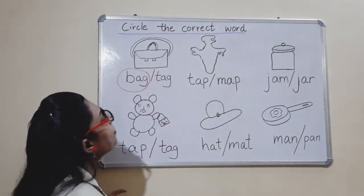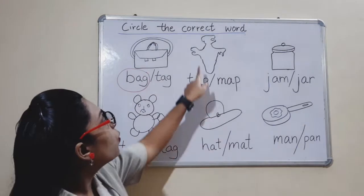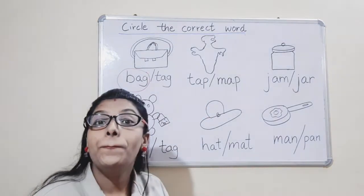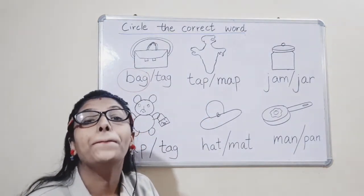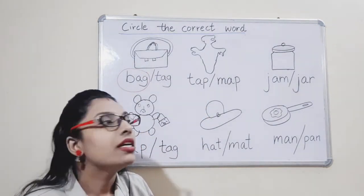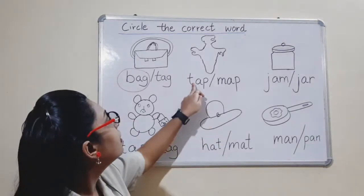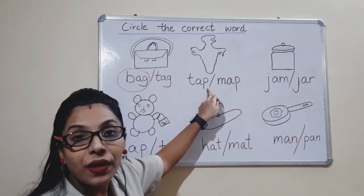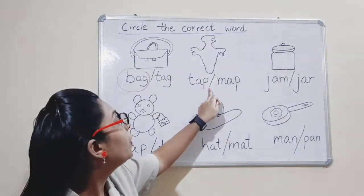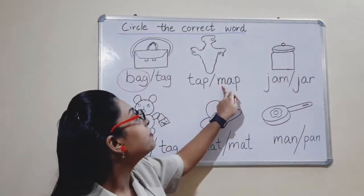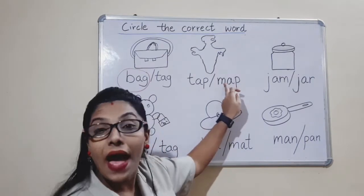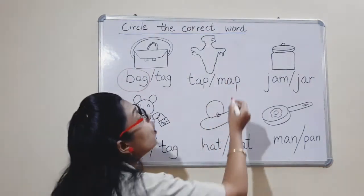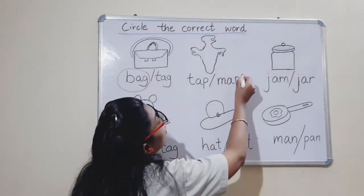Now what is this? M-A-P — map. Is this M-A-P, map? No. Is this M-A-P, map? Yes. So circle it.